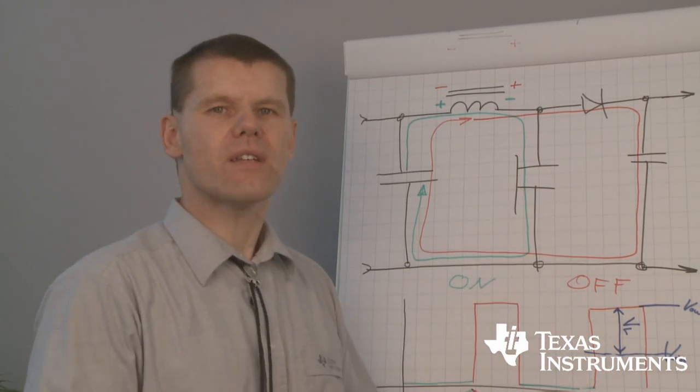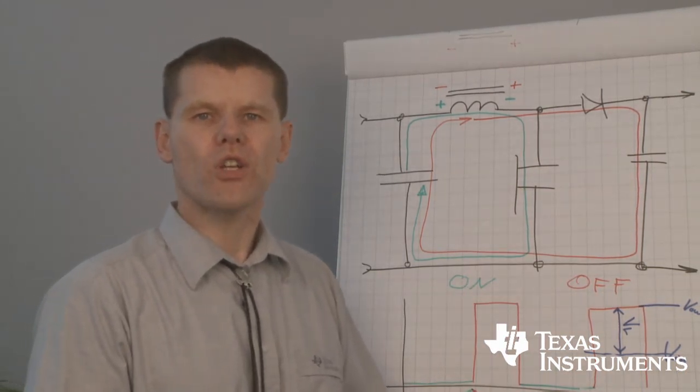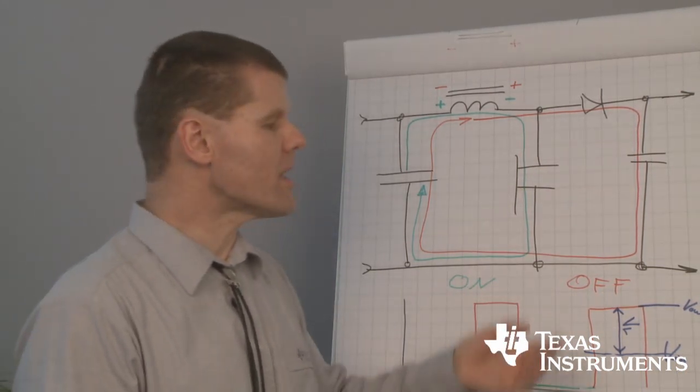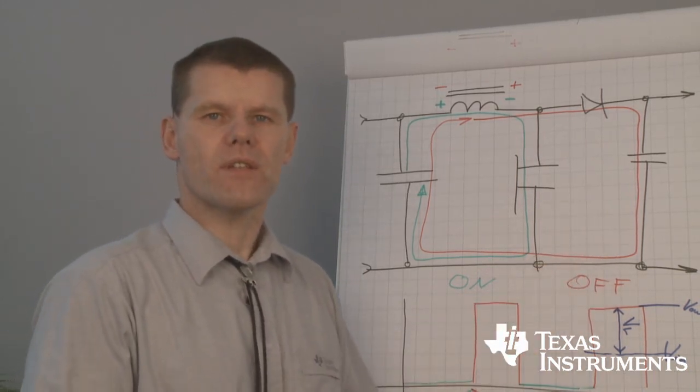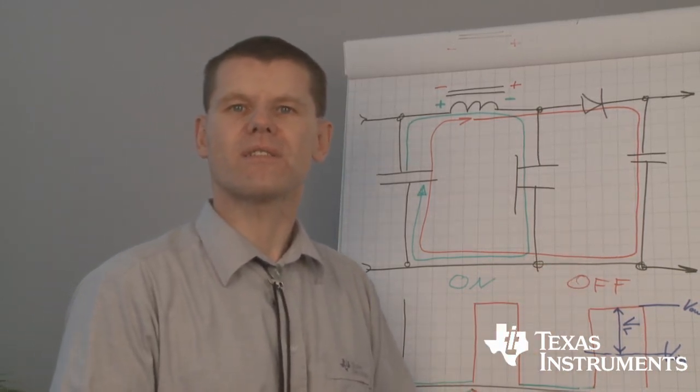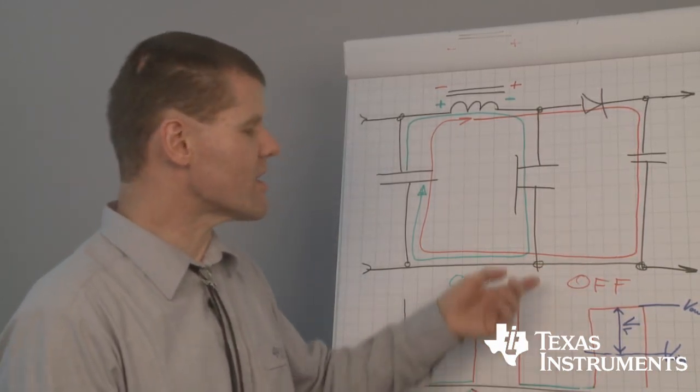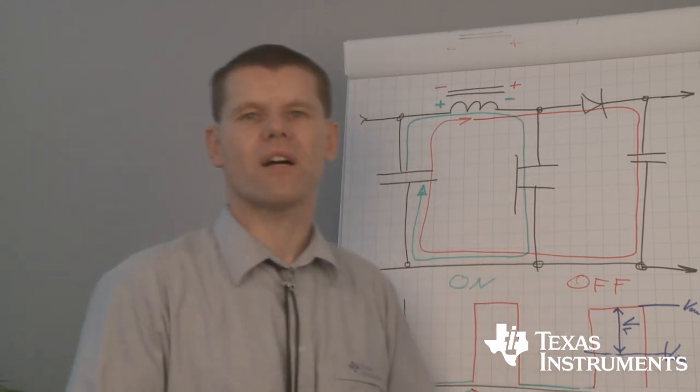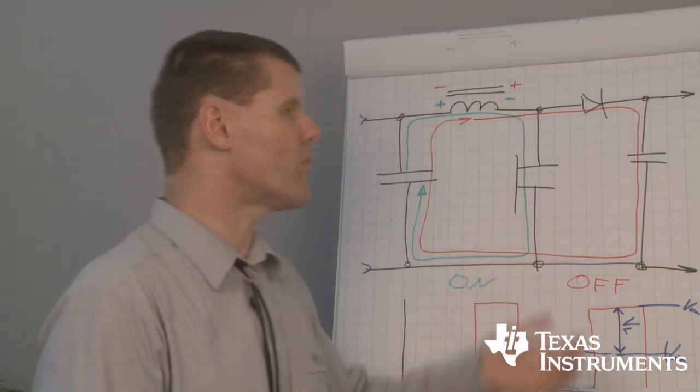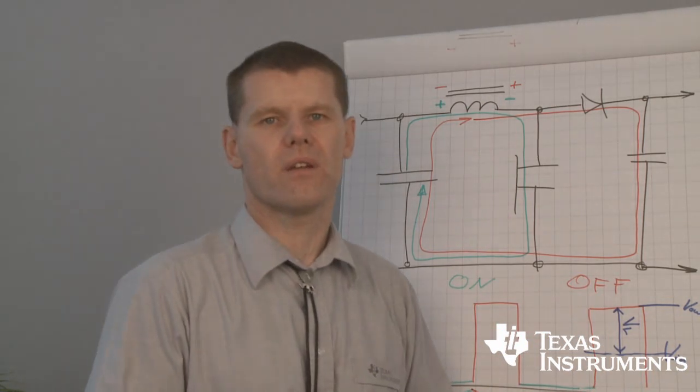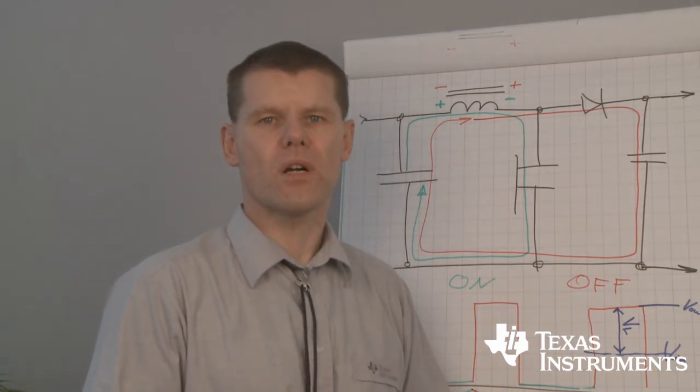If we are now increasing our load to get more energy to the output, typically we need a longer off state. But in a fixed frequency system, this means we are decreasing our on state. And that is vice versa what we want to have. We want to have more energy at the inductor. That's the behavior of the right half plane zero.